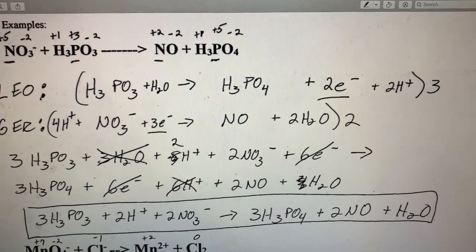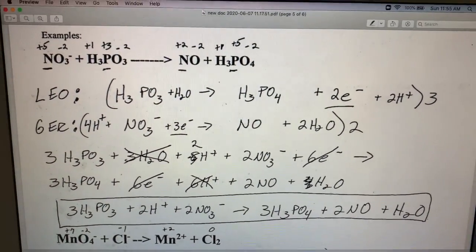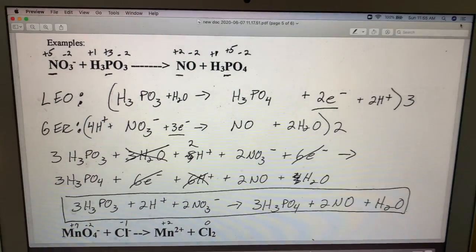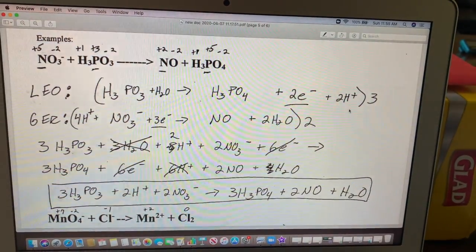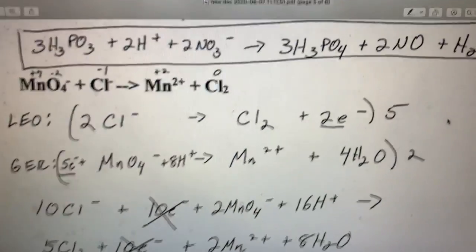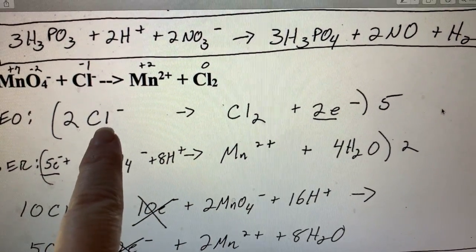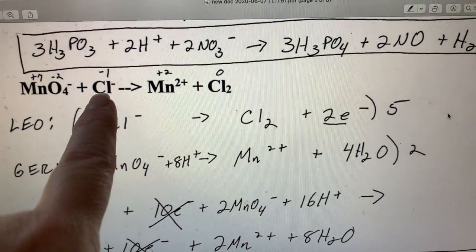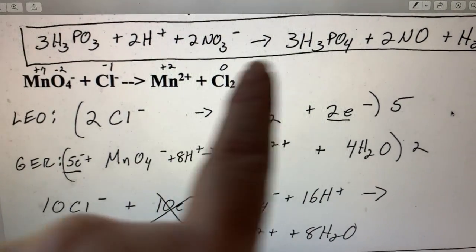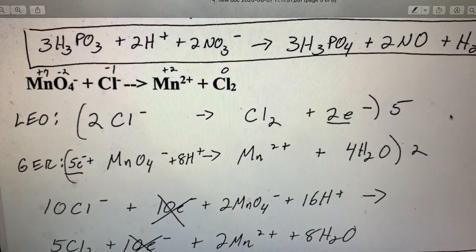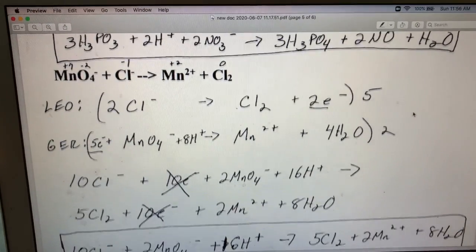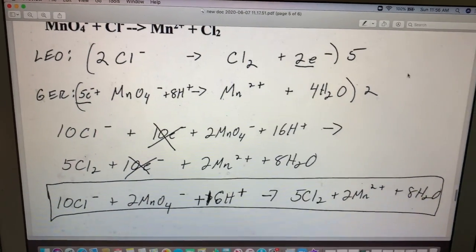Next up, go ahead and do the next example. You can pause the video and give that a try. Welcome back. So let's take a look at our next example. The only real difference in this one is you did have to account for the fact you had to balance those chlorines first. Each chlorine went from negative one to zero. There was two chlorines. So that meant you lost two electrons there. That's really the only difference from the one up above. And here we go with your final answer.